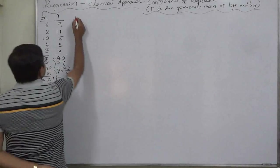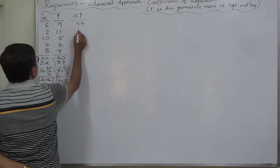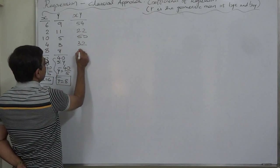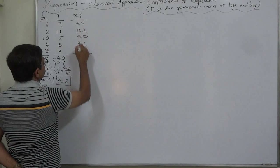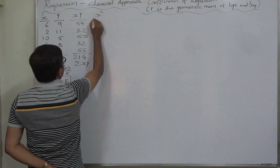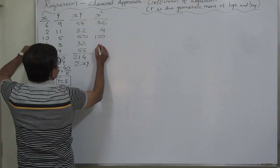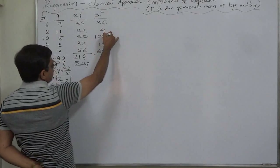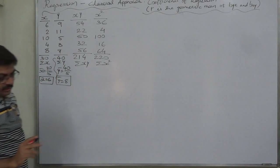Now computing x times y: 6×9=54, 2×11=22, 10×5=50, 4×8=32, 8×7=56, giving sigma xy = 214. Wait — the total comes to 240. For x squared: 6²=36, 2²=4, 10²=100, 4²=16, 8²=64; adding gives 36+4+100+16+64 = 220, so sigma x squared is 220.